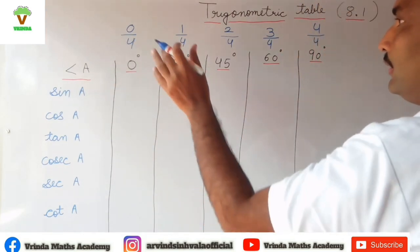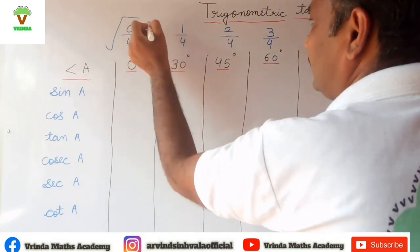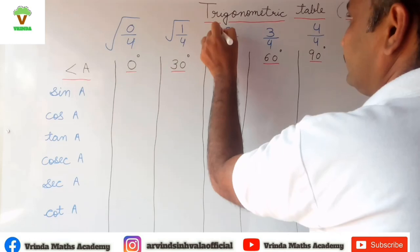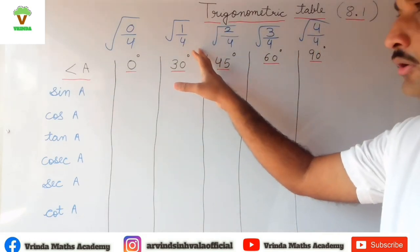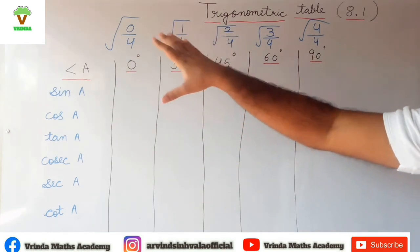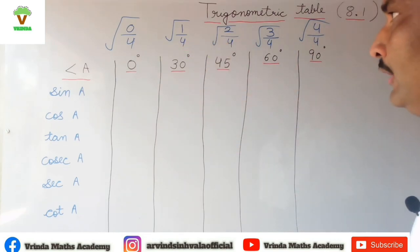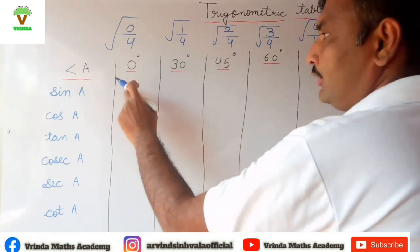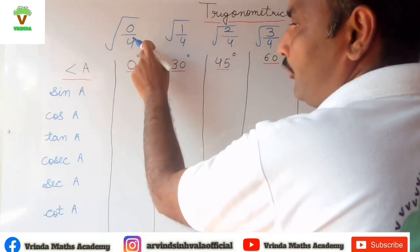After dividing all the numbers by 4, put it under root. This is what you need to do in the beginning. Now your 50% work is done. Now we have to just put here values: 0 divided by 4...